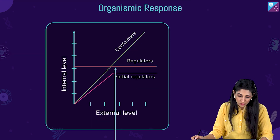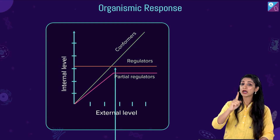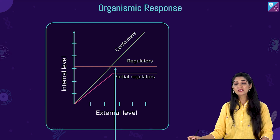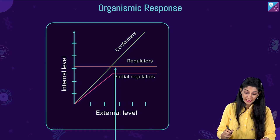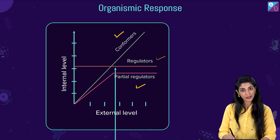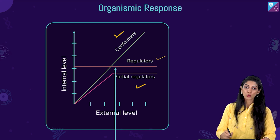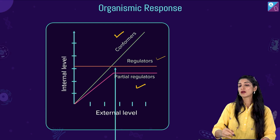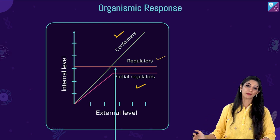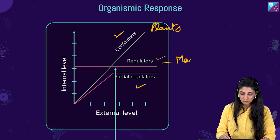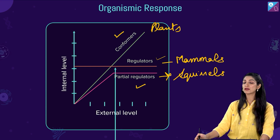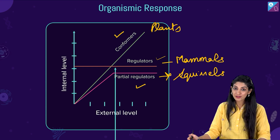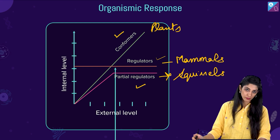Another important graph from ecology is about organisms as regulators, conformers, or partial regulators. Regulators maintain their internal environment constant. Conformers do not regulate — they conform to the external environment, for example plants. Partial regulators like squirrels will regulate up to a point, but then have to conform, because regulation is an energetically expensive phenomenon.